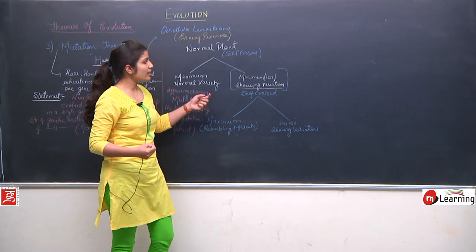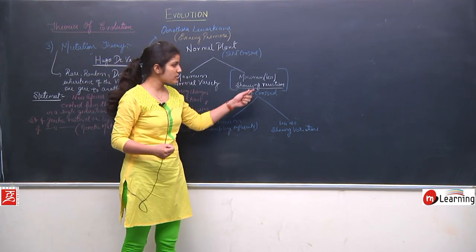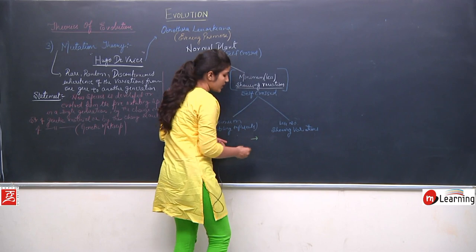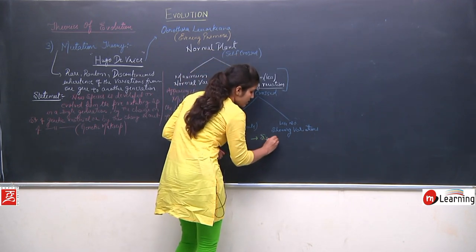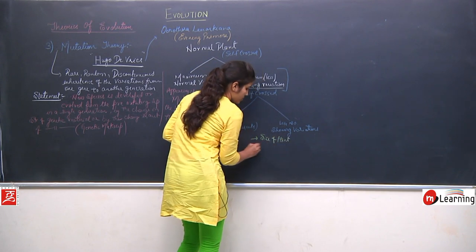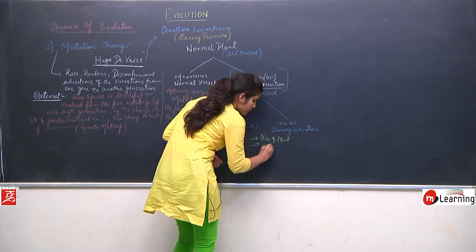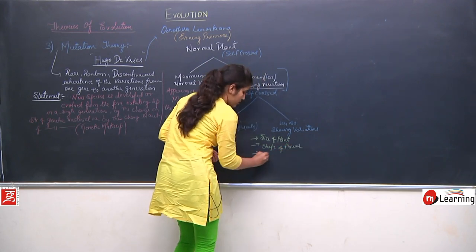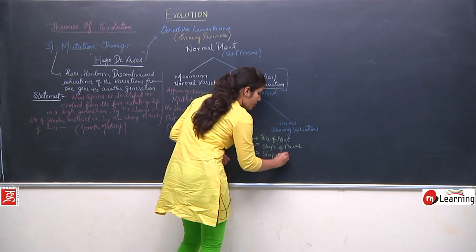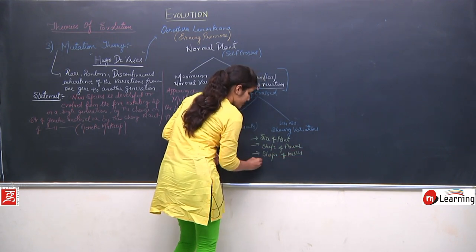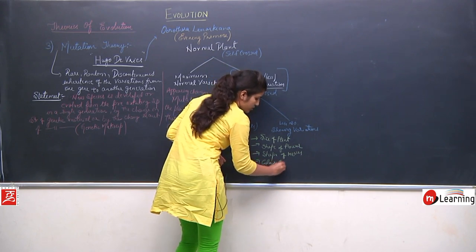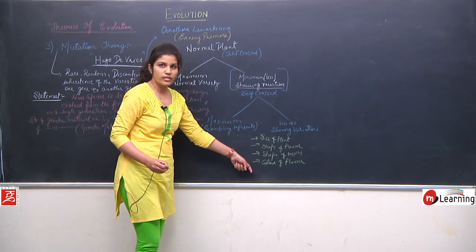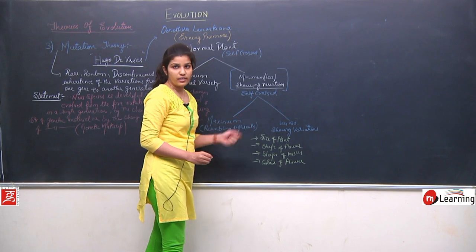The variations the varied plants were showing included differences in the size of the plant, shape of flower, shape of leaves, and color of flower.